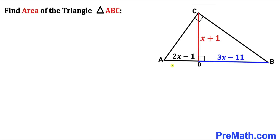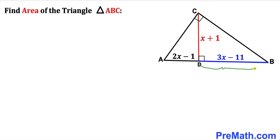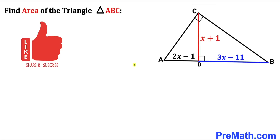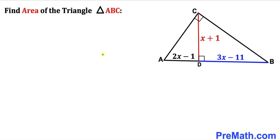Welcome to pre-math. In this video we have a right triangle ABC such that altitude CD is represented by x plus 1. Line segment AD is represented by 2x minus 1, and line segment BD is represented by 3x minus 11. We are going to calculate the area of triangle ABC. Please don't forget to give a thumbs up and subscribe.